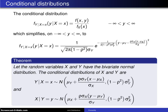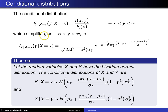This slide considers conditional distributions for the bivariate normal distribution. The conditional distribution f of y given x equals x is the joint distribution divided by the marginal distribution. We already have the joint and the marginals, so when you put those together, calculate the ratio and simplify,